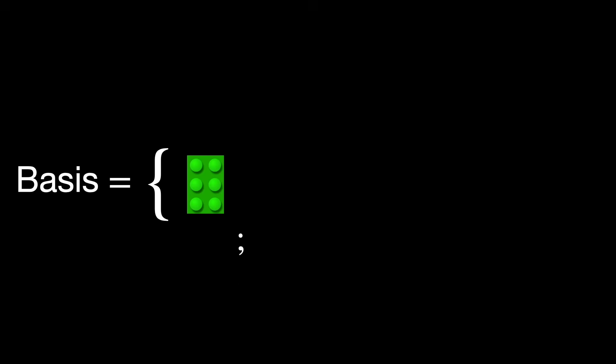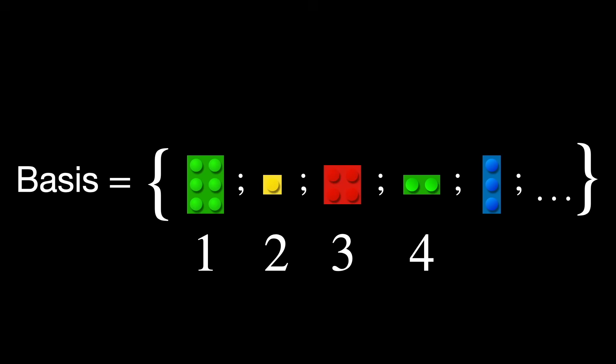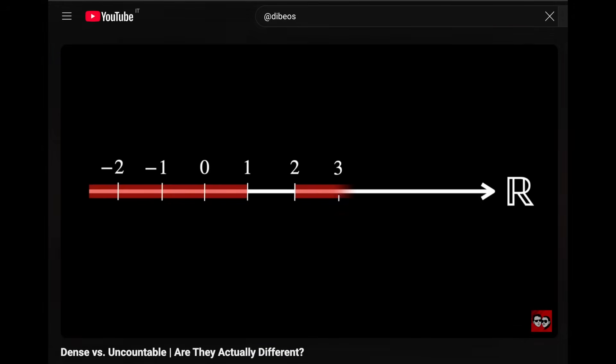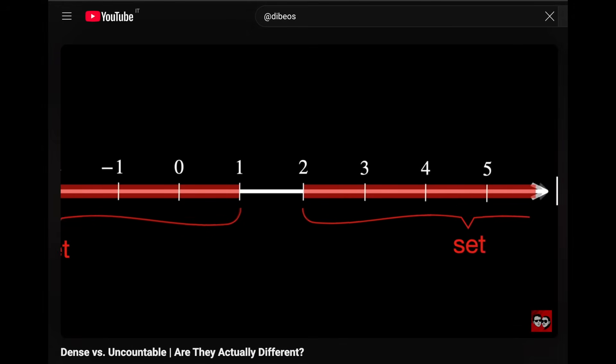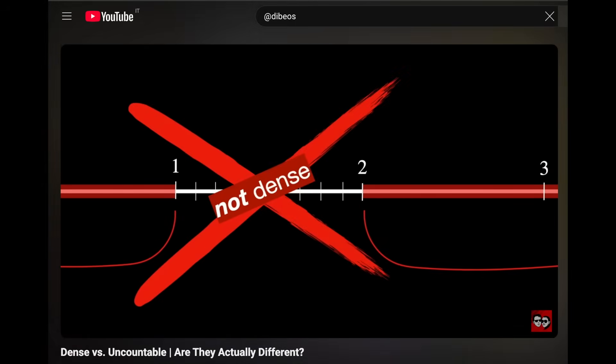A basis is a special collection of open sets that acts like the building blocks of a space. We want the set of basic building blocks — the open sets — to be countable, meaning you can make a list of them. Even if it's infinite, the list behaves like counting: one, two, three, four, and so on. If you want to delve deeper into exactly what countable means, check out this video — link in the description.